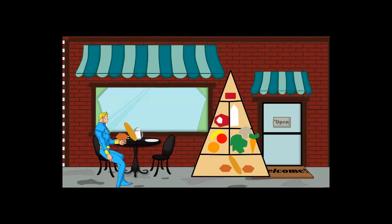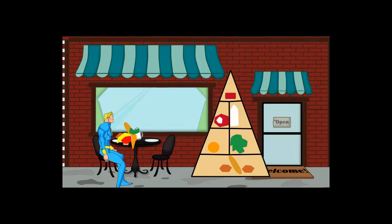Have 5-11 servings of bread, cereal, or rice, 3-5 of vegetables, and 4 of fruit. Their antioxidants and fiber help you to digest.